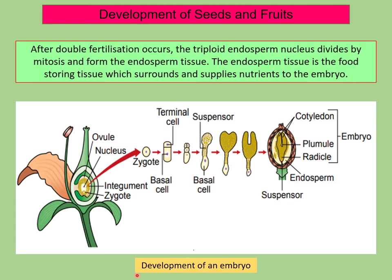These diagrams show the developments of an embryo after double fertilization occurs. The triploid endosperm nucleus divides by mitosis and forms the endosperm tissue. The endosperm tissue is the food-storing tissue which surrounds and supplies nutrients to the embryo. The embryo consists of cotyledons, plumules and radicles.